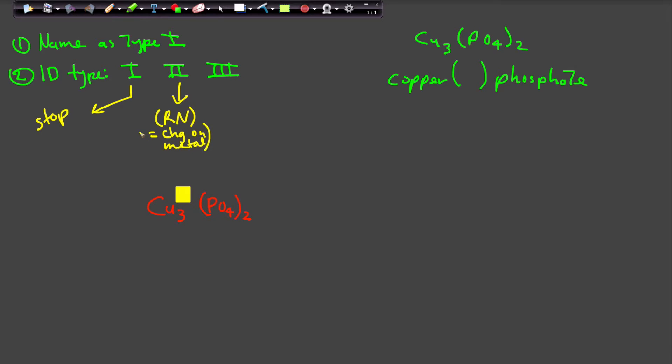So the Roman numeral is, and this is critical that you remember this, that the Roman numeral is equal to the charge on the metal. That is what that represents, and that's what we're trying to find out now.